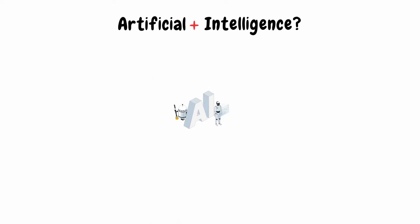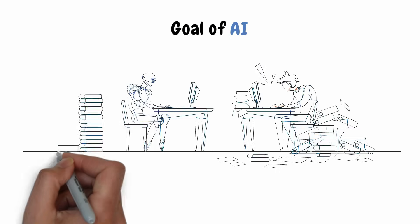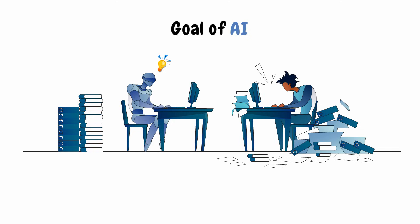Artificial intelligence is a broad area of computer science that makes machines seem like they have human intelligence. The goal of AI is to mimic the human brain and create systems that can function intelligently and independently.